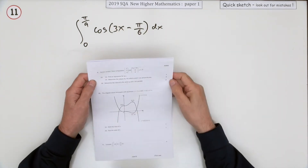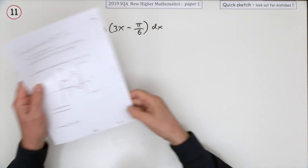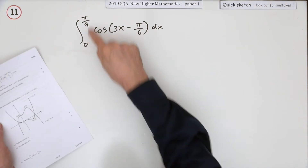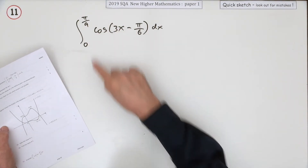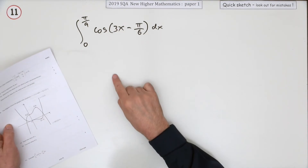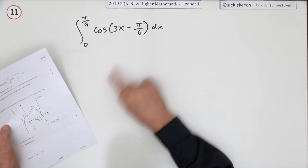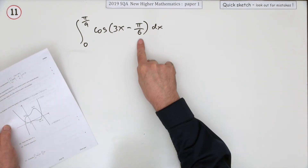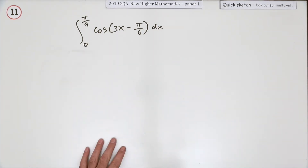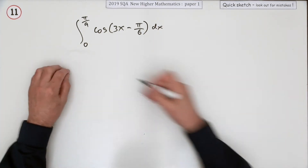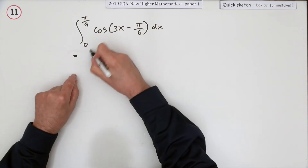Number 11 from the 2019 Higher Maths Paper 1 — four marks for a definite integral. It's a trig integral, but more specifically it's a function of a function, and it's got radians, which it has to have anyway for integration and differentiation. So take it a bit at a time.